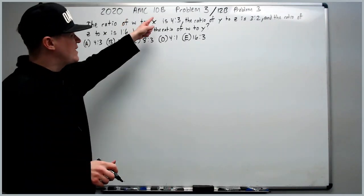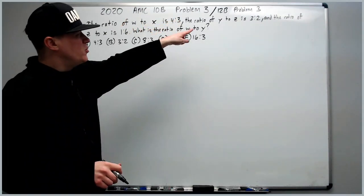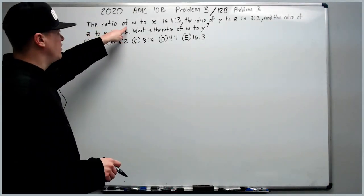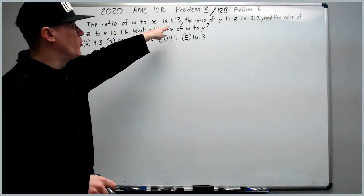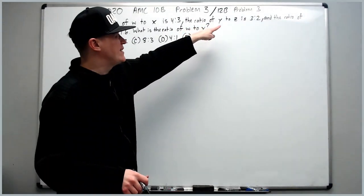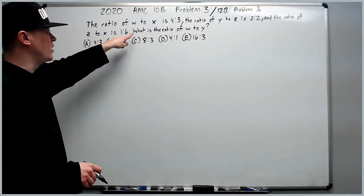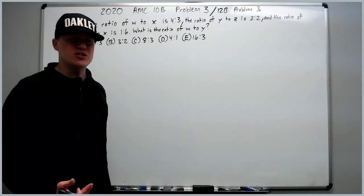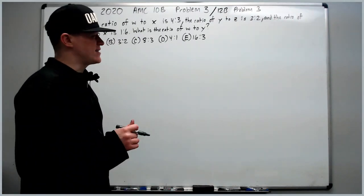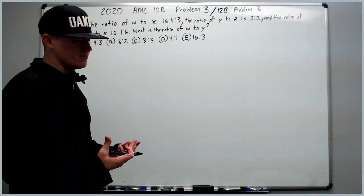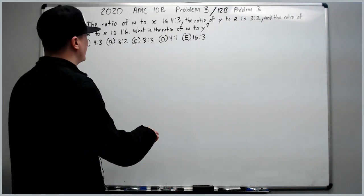On to the 2020 10B problem 3, which was also the 12B problem 3. The ratio of w to x is 4 to 3, the ratio of y to z is 3 to 2, and the ratio of z to x is 1 to 6. What is the ratio of w to y? This is a tactic I picked up from volume 1 of AOPS. If you have access to it, it's pretty great.